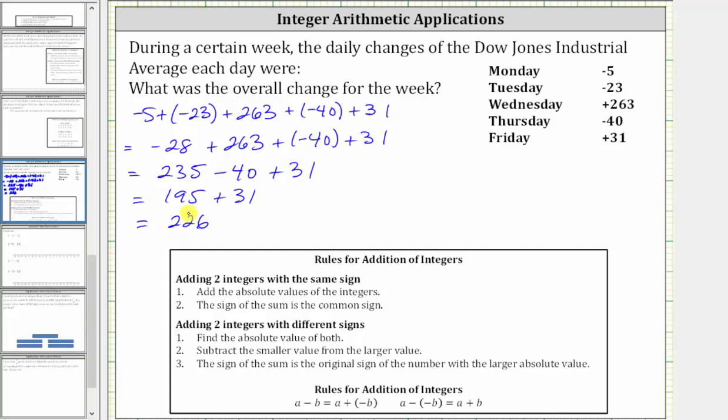So the overall change is positive 226, which means the overall change for the week is a gain of 226 points. I hope you found this helpful.